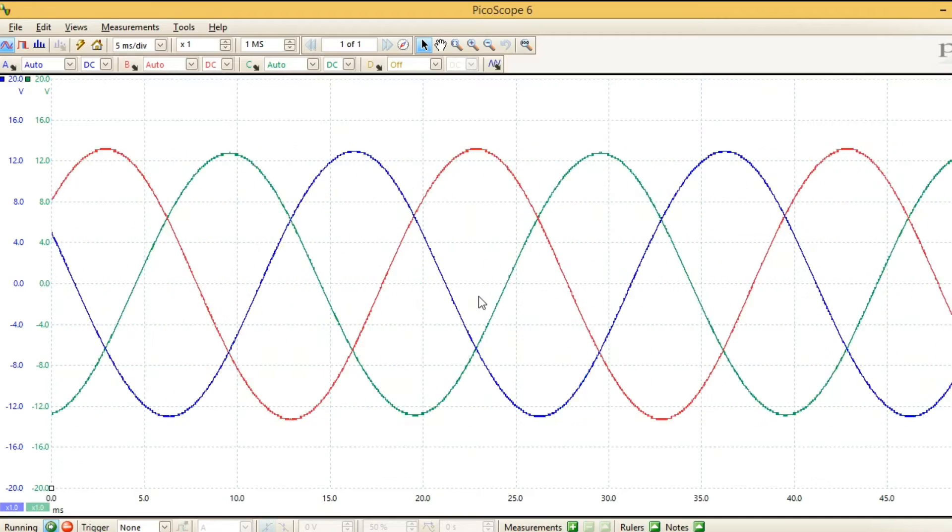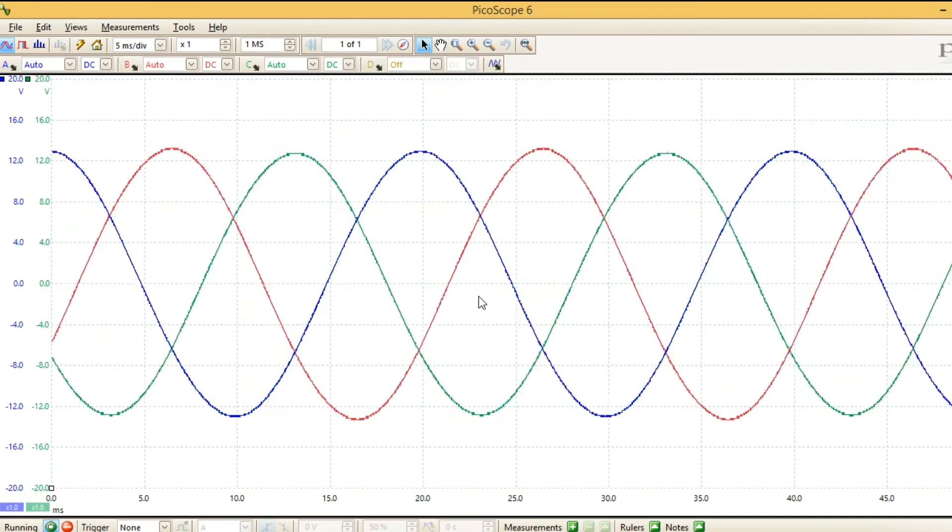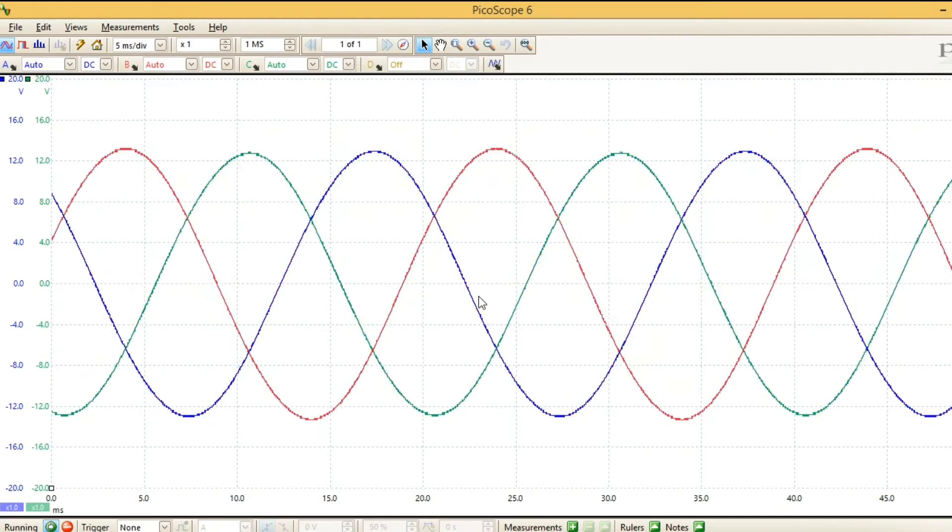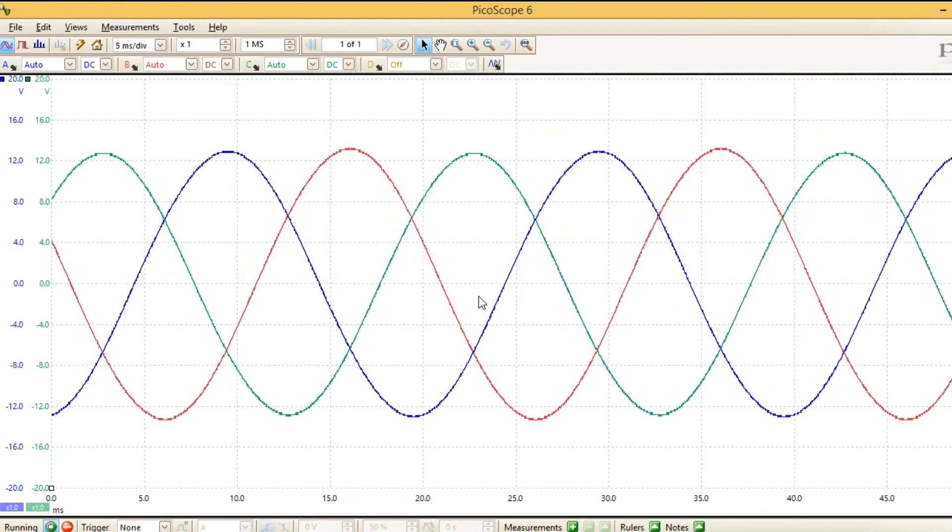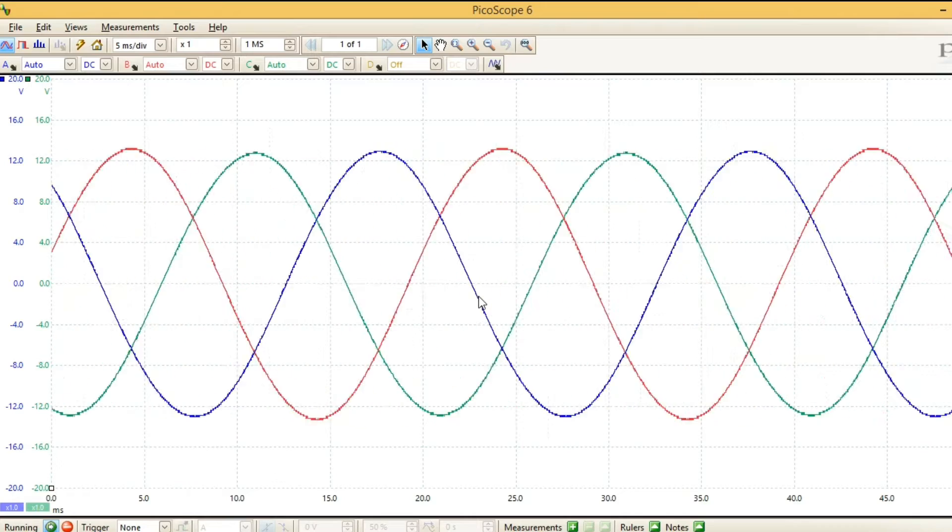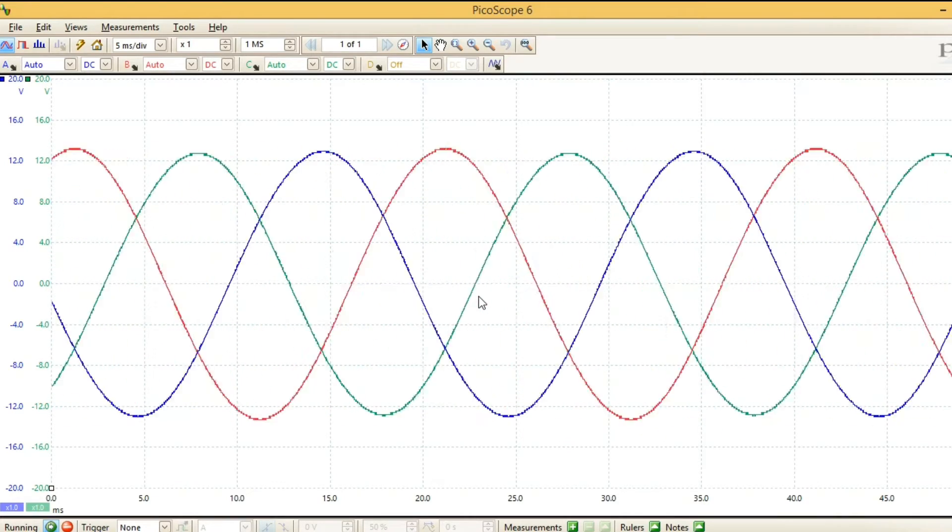That's the reason why if you've got a balanced load, if you've got the same amount of current flowing through each one of the conductors, you actually don't need to have a neutral. Where the three currents meet between the loads, there is literally no current flowing through that neutral.